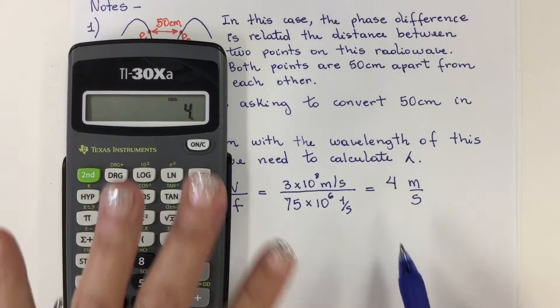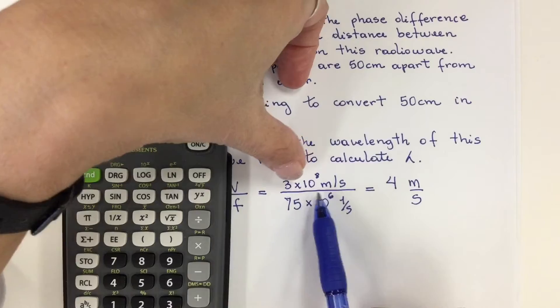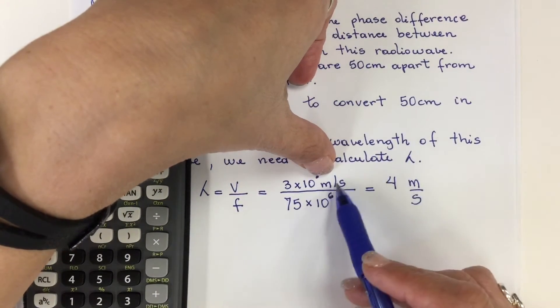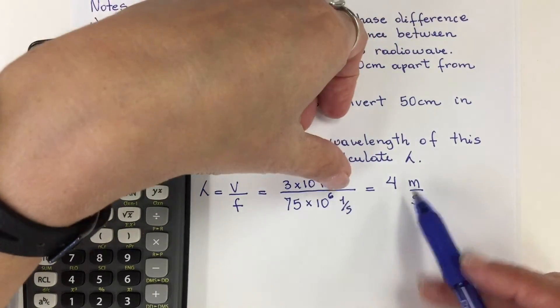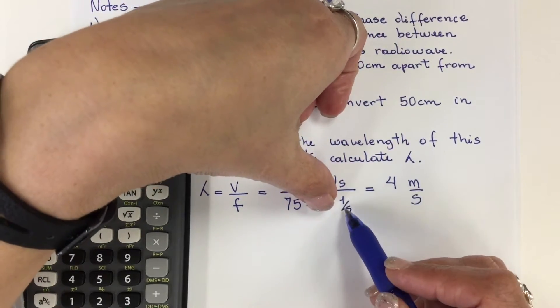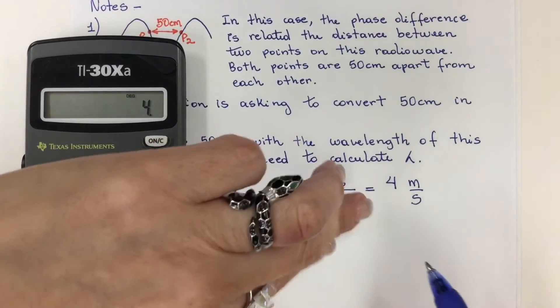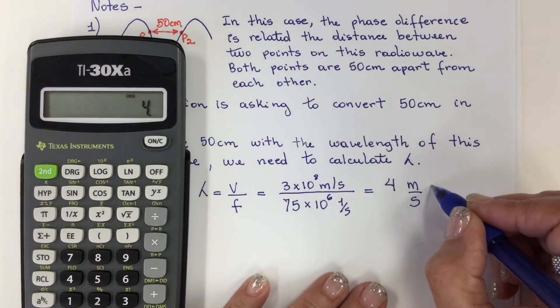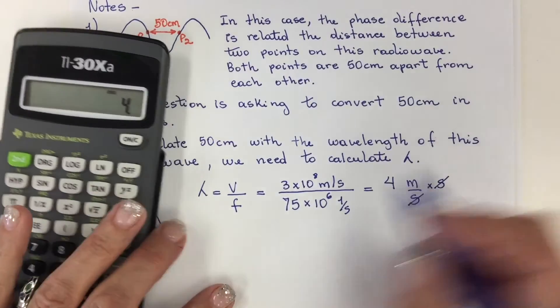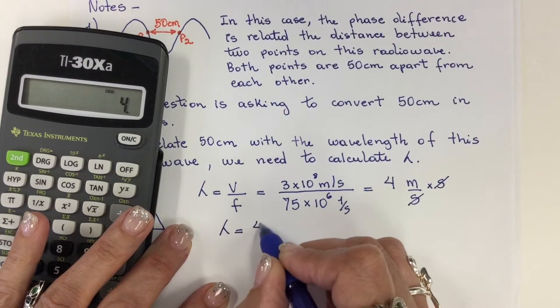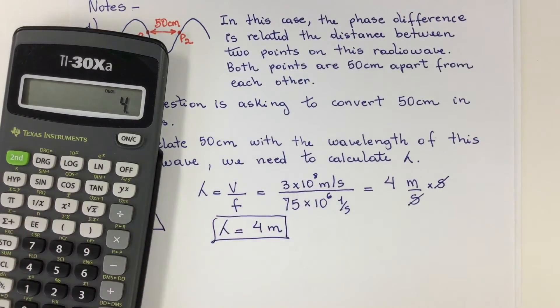Now I want to take this opportunity to show you how we work with the units. The velocity here is meters per second. On the denominator, it's 1 over second. When you have a fraction on the denominator, I'm going to flip it, so that will be seconds. Now I cancel second with second. That's why my wavelength unit is meters. So that is the wavelength of this radio wave.